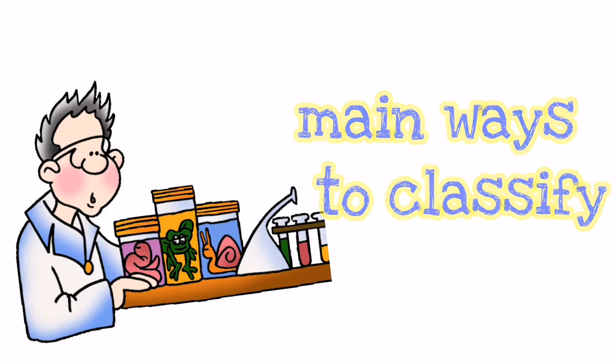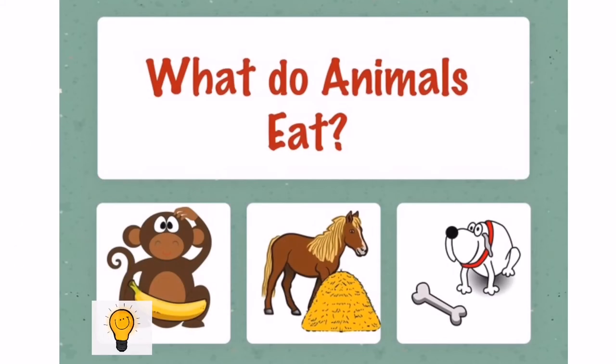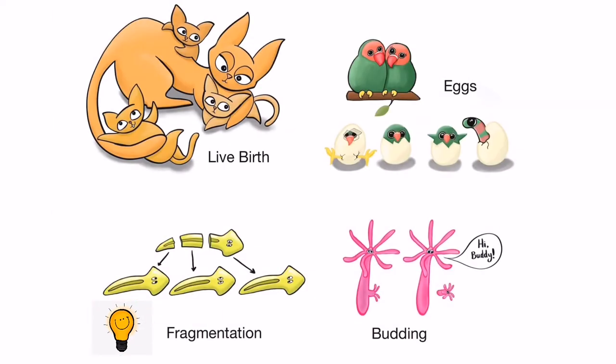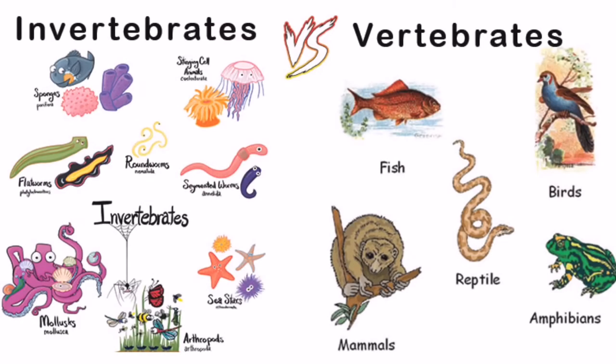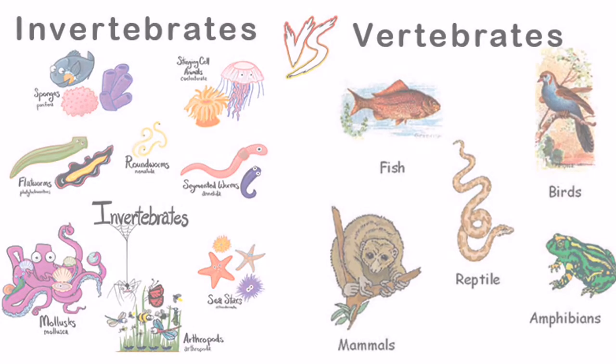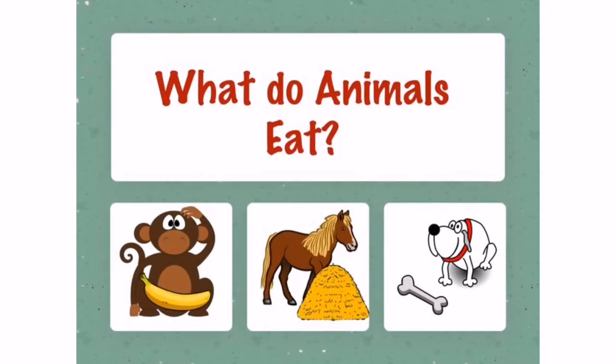One: the food they eat. Second: they may be classified according to how they are being reproduced. And number three: according to their structure.